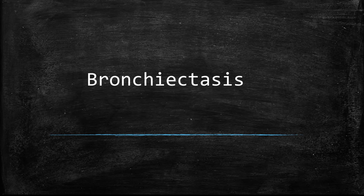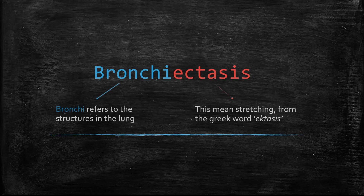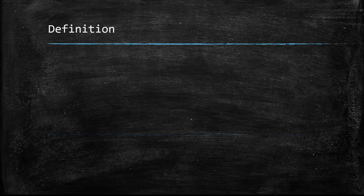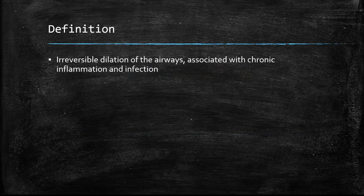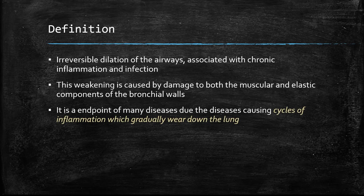What is bronchiectasis? The literal meaning of the word means stretching of the bronchi. The definition we use is that it's an irreversible dilatation of the airways associated with chronic inflammation and infection. This infection-inflammation cycle causes damage to the bronchi, leading to changes in structure and the components of the bronchi walls.